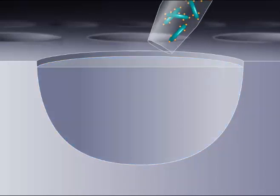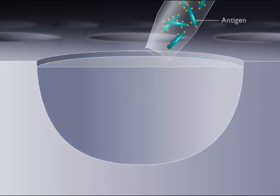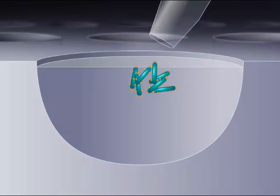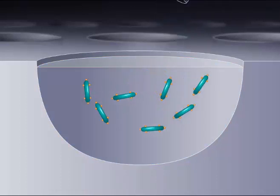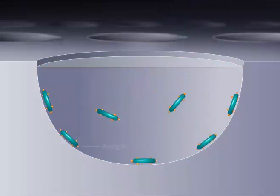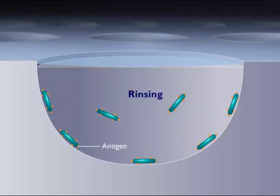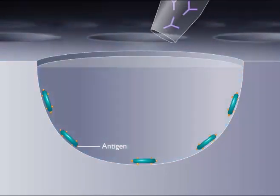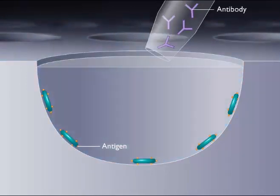In the indirect ELISA, antigen is added to the microtiter plate well, and the antigen attaches to the walls of the microtiter plate. After rinsing to remove excess antigen, the serum suspected of containing the antibodies is added.